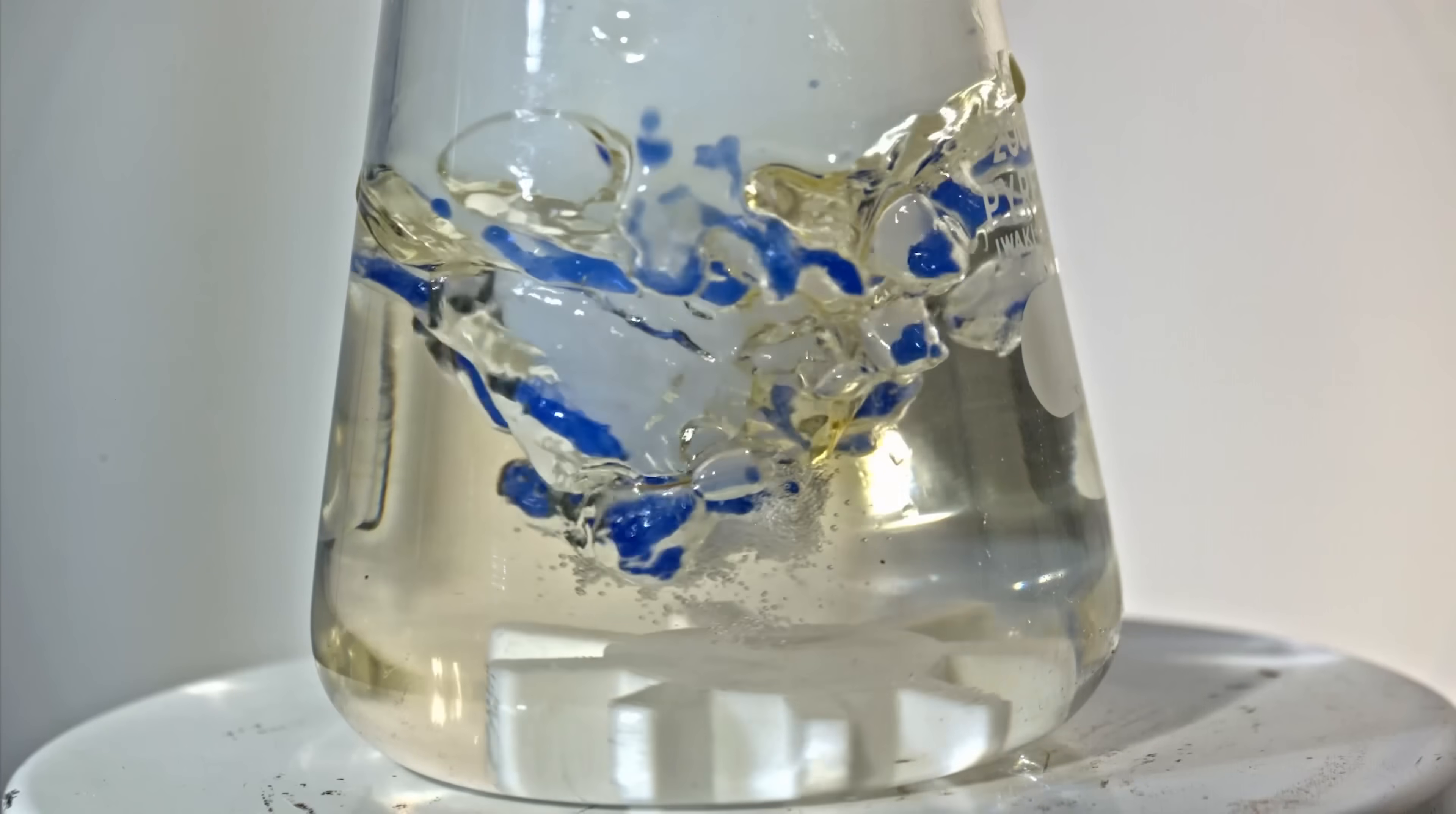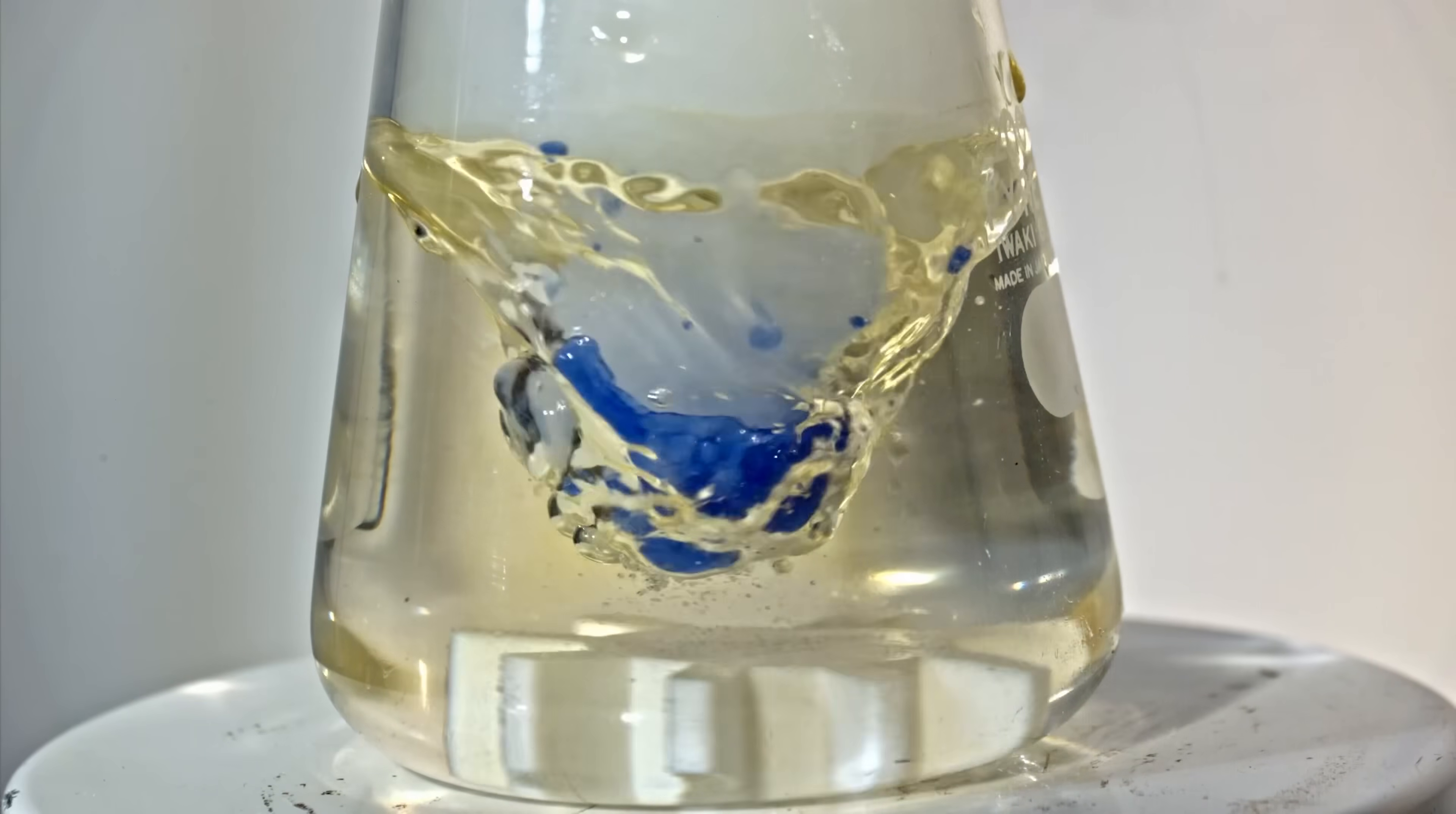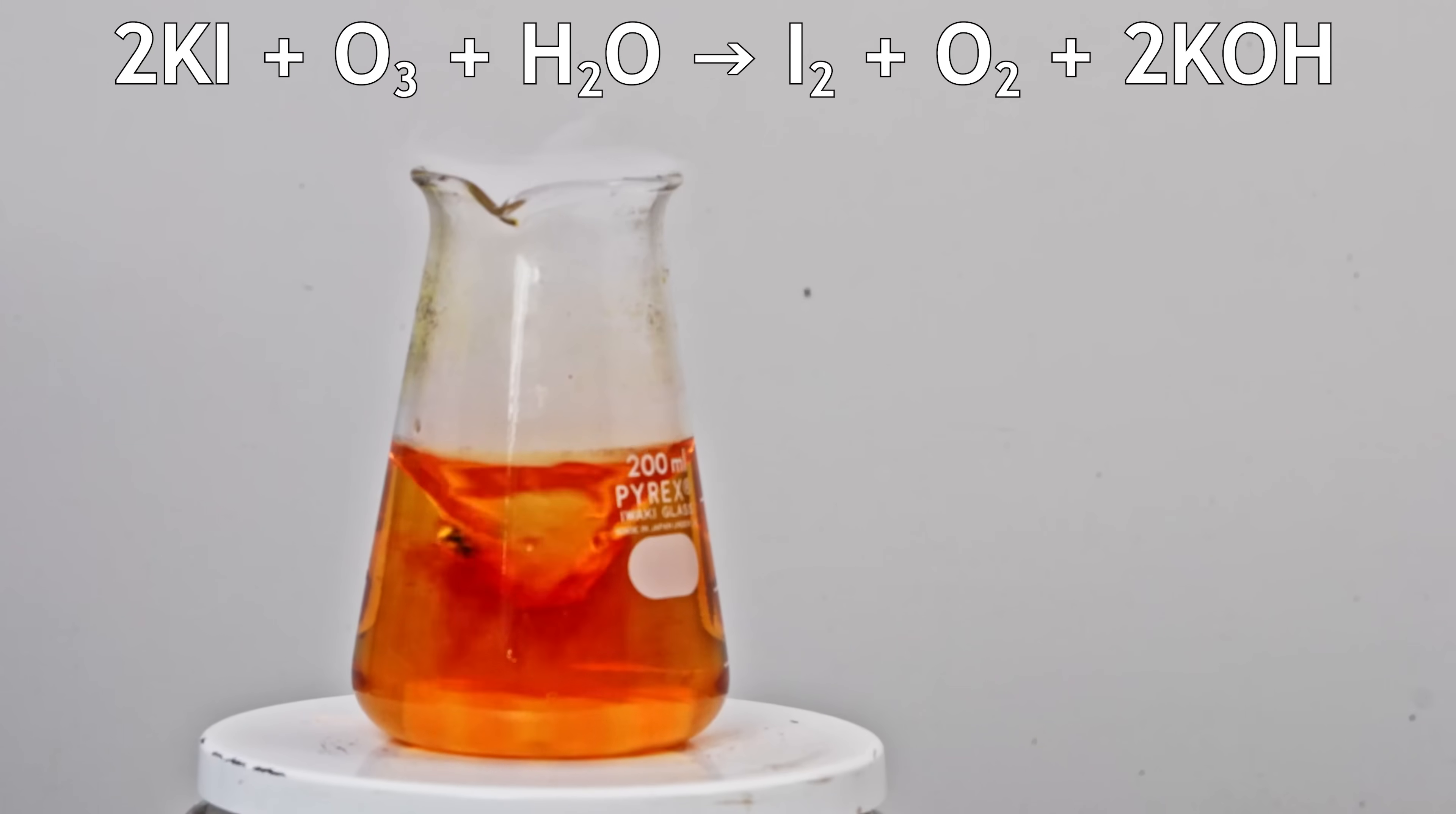Ozone oxidizes iodide ions into elemental iodine, which darkens the solution. Note that as oxygen evaporates and the ozone concentration increases, the amount of iodine released also increases. At the end of the reaction, when only highly concentrated ozone remains, the iodine release peaks, causing the solution to darken sharply.